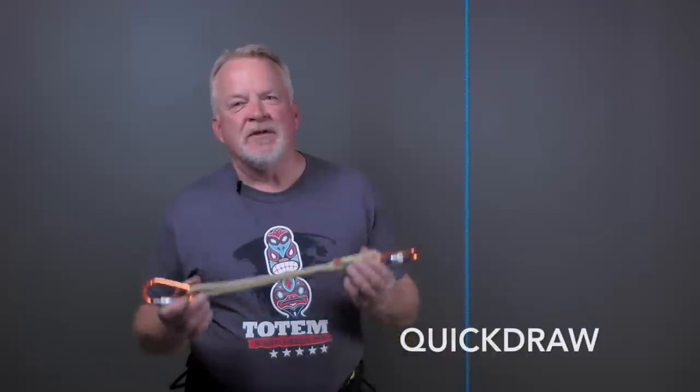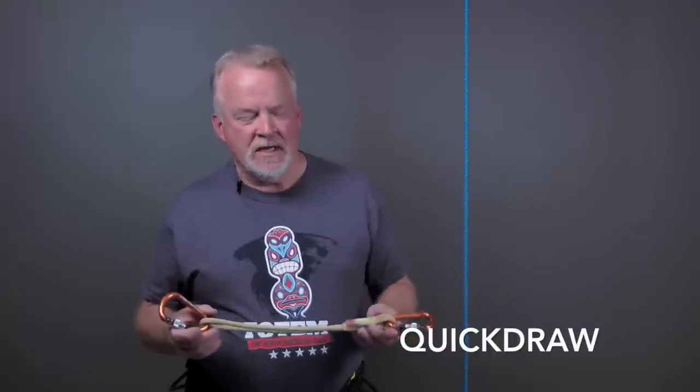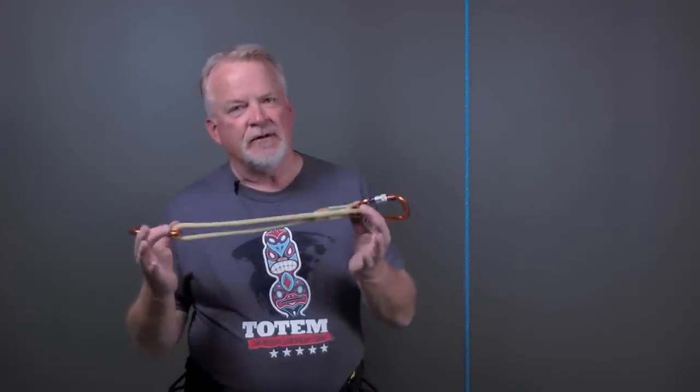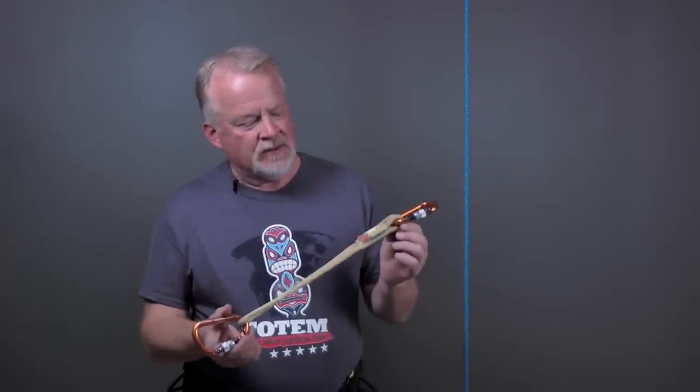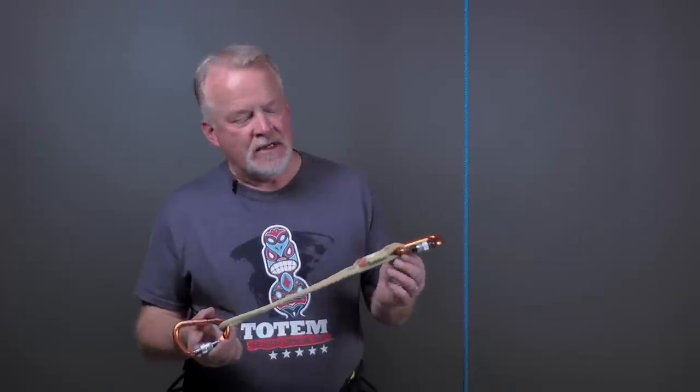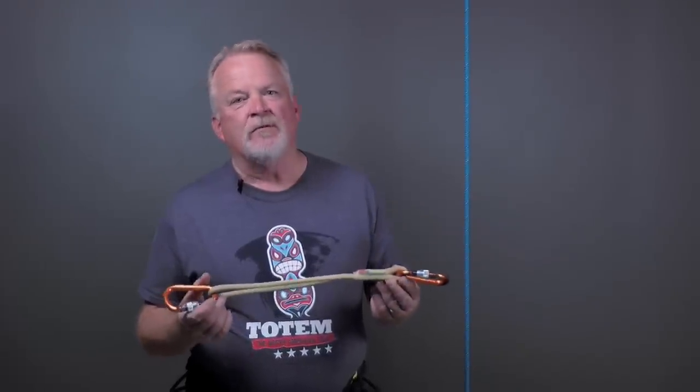Another thing users have been doing with their VT Prusiks is setting up emergency quick draws. I could set it up as a full length, 33-inch quick draw. In this case, I've folded it in half. I can also fold it in thirds or fourths, to create a quick draw of any length that I need.